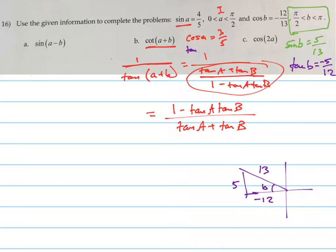And what's the tangent of A? It's opposite over adjacent, 4 over 3.